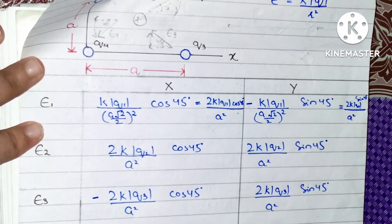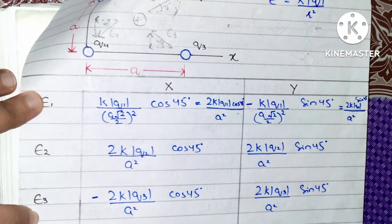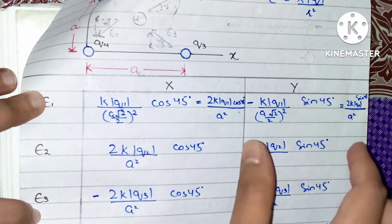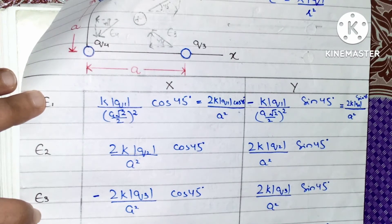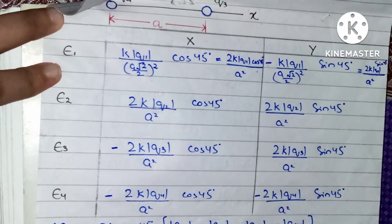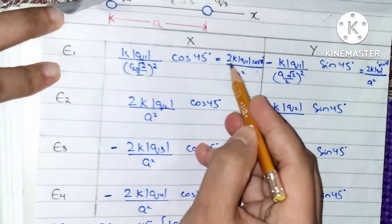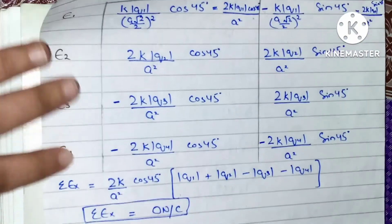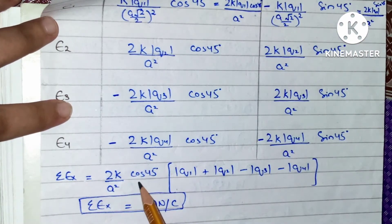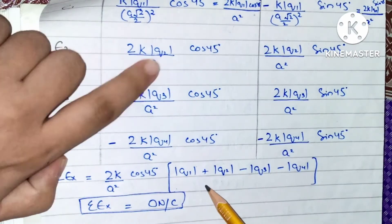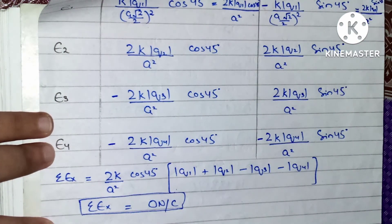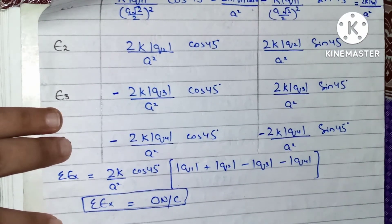Now that we have all four fields E1, E2, E3, and E4, we simply add up all x-components and y-components to get the total electric field at the square center. For the sum of x-components, we take 2k·cos45°/a² as a common factor, giving us the expression with (q1 + q2 − q3 − q4). Substituting the values, the x-component of the total electric field equals 0 N/C.